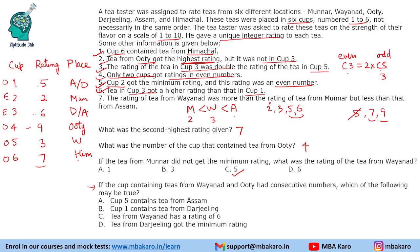Now let us look at the options. Cup 5 contains tea from Assam — this is false. Cup 1 contains tea from Darjeeling — this may be true. Tea from Vyanard has rating 6 — that is false. Tea from Darjeeling got the minimum rating — minimum is from Munnar, so this is also false. Whenever a question says 'may be true', all other options are false and that option could possibly be true or false. So the answer is option B.